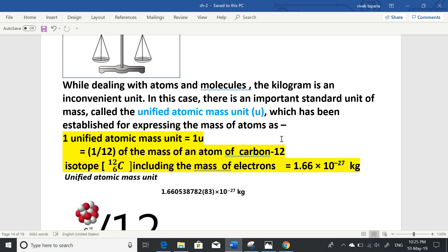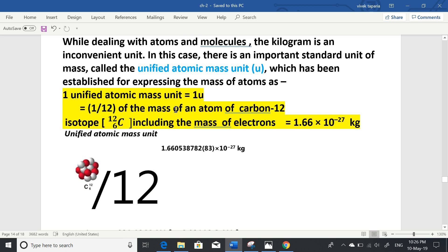Unified Atomic Mass Unit. We use it in modern physics, which has been established for expressing the mass of atoms. One Unified Atomic Mass Unit 1u equals 1/12 part of the mass of an atom of Carbon-12 isotope, including the mass of electrons. The value is 1.66×10⁻²⁷ kg.